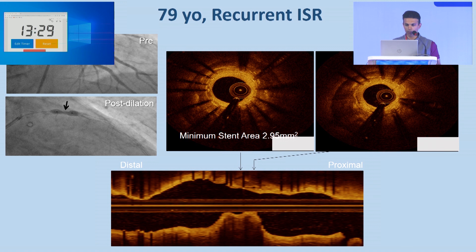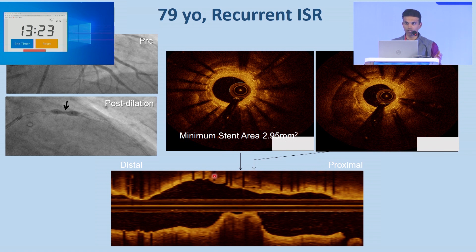Let me pull out a pointer here and point to where you have this deep, thick layer of calcium on the OCT resulting in this dramatic area of under-expansion that you know is going to be a nidus for a problem.